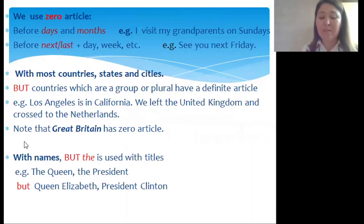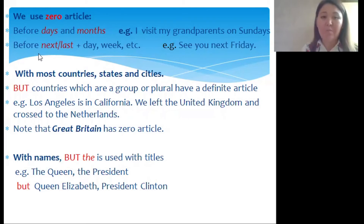Before days and months we often use zero article. Example: 'I visit my grandparents on Sundays.' Before 'next' or 'last' with days or weeks, we also don't use articles. Example: 'See you next Friday.'